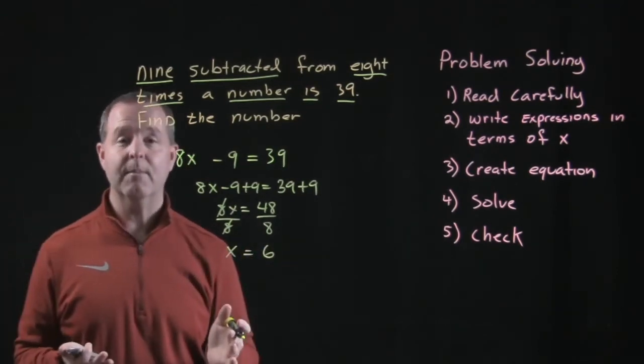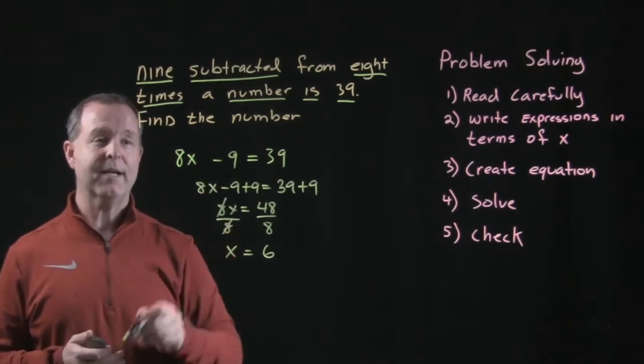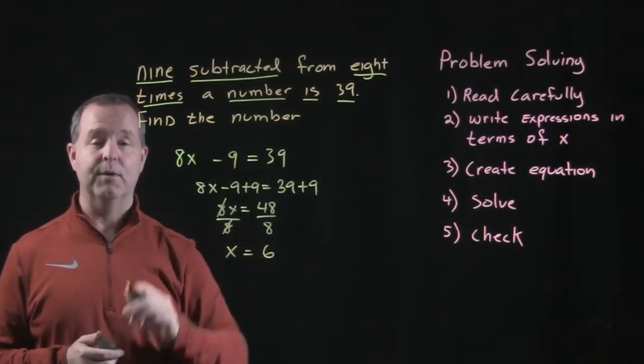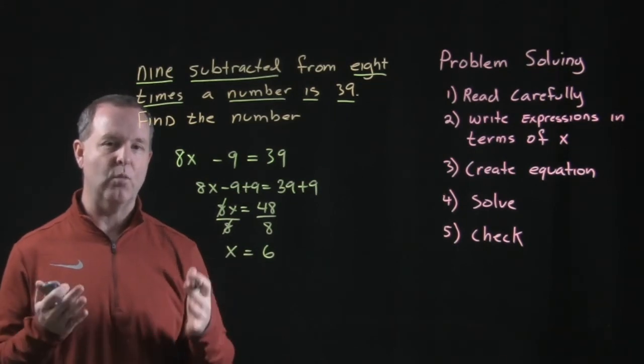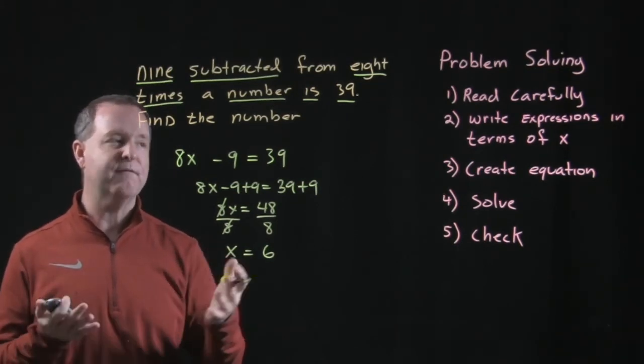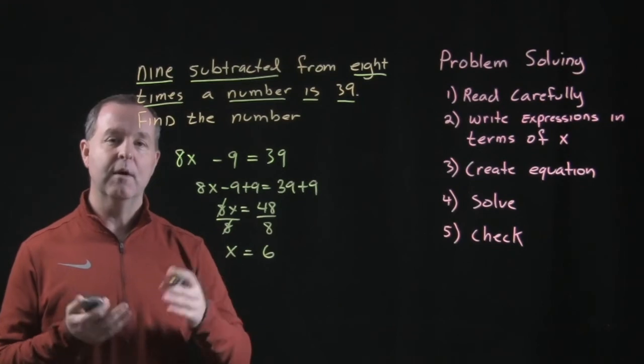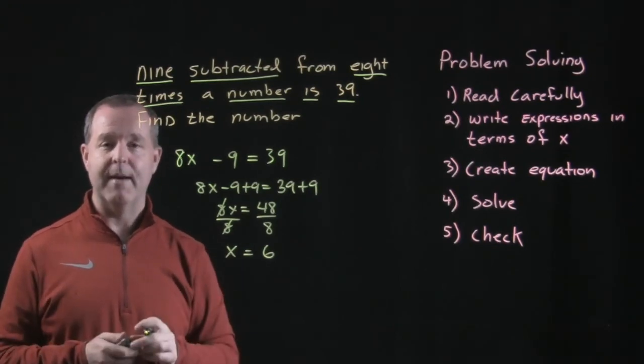So what is the number? 9 subtracted from 8 times this number produces 39. So this is a process I want us to help to start to get the feel of as we learn to problem solve with our mathematical thinking.